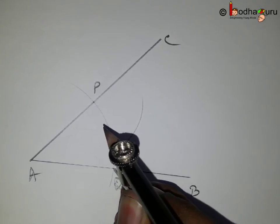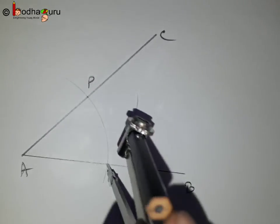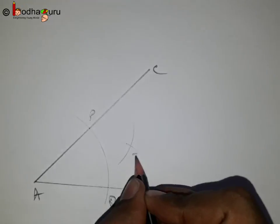With Q as centre and without altering the radius, draw another arc in the interior of the angle. Let the two arcs intersect at point Z.